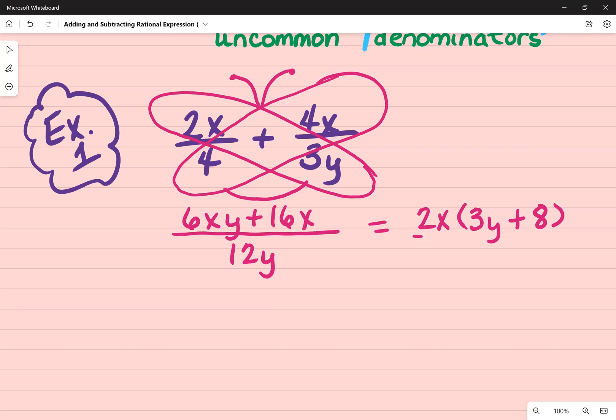And on the bottom, I still have 12y. Well, what I notice is on the outside of my parentheses at the top, I have a 2x, and on the bottom I have a 12y. So the 2 and the 12 can simplify even further. So that becomes a 1 and this becomes a 6. I divide it both by 2.